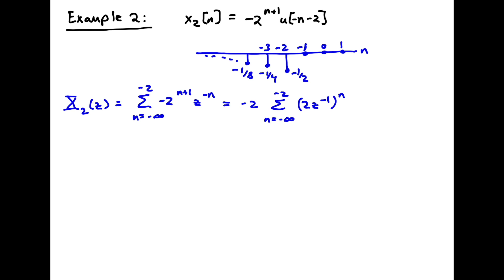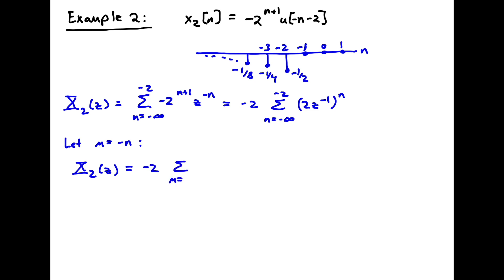This sequence runs from minus infinity to minus 2. To use our formula, we'd like it going off to positive infinity, so we need a change of variables. We let m equal minus n, and rewrite x2(z) as minus 2 times the sum from m equal infinity to 2 of (2z^(-1))^(-m).